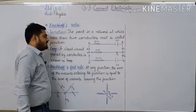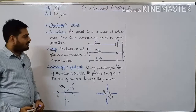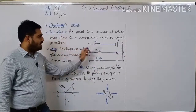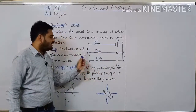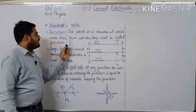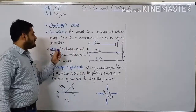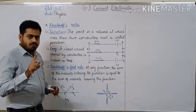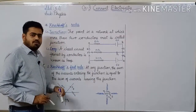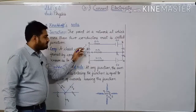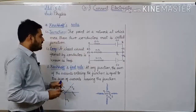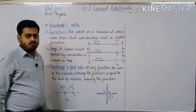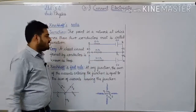The point in a network at which more than two conductors meet is called a junction. This is the circuit, and these are the points A, B, C, D, E, and F. More than two conductors must meet — so minimum three. Let me tell you how many conductors meet at a point. If only two conductors meet, then it is not a junction.